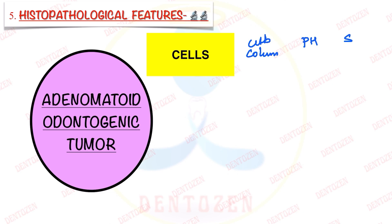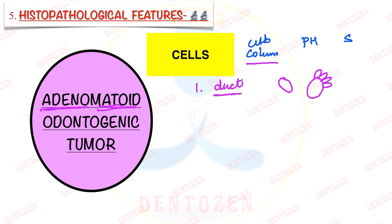Now we have to see how these cells are arranged. Columnar cells can be arranged in duct-like structures, and that is how the name of this tumor has come — 'adenom' means duct or tubular, and 'atoid' means like. The duct-like structures are formed by columnar cells, and the nuclei of these columnar or cuboidal cells are polarized away from the lumen, resembling ameloblast cells. The inside of the duct may be lined by a pink eosinophilic ring known as the hyaline ring, and the lumen may or may not be filled with eosinophilic material.